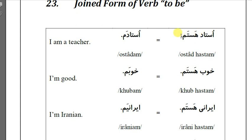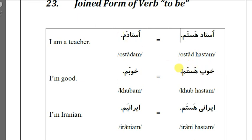USTAD HASTAM — USTAD means 'teacher,' HASTAM means 'I am,' so USTAD HASTAM means 'I am a teacher.' You can connect these two and remove the HAST part, so you could say OSTADAM. These two are the same — OSTADAM is the joint form. Next one: KHOB HASTAM, meaning 'I'm good.' The joint form is KHOBAM.